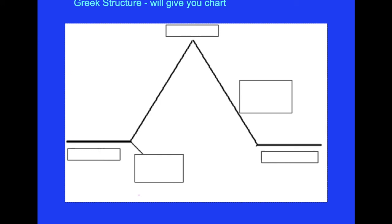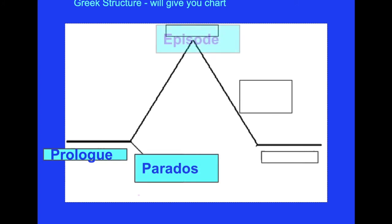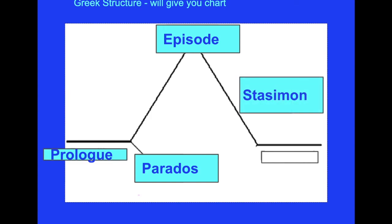If you look at this chart, it should look familiar from our basic dramatic structure. The only difference is that if you pull this out to a full-length Greek play, you would have multiple peaks. So: prologue — introducing what's going on; chorus intro; an episode where something happens; then a stasimon where the chorus talks about it; probably a couple more of those; and then finally your resolution — your exodus.